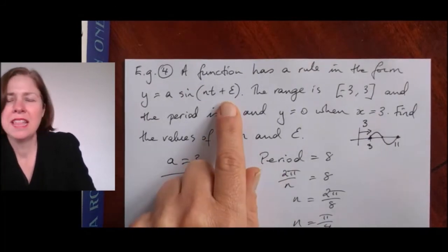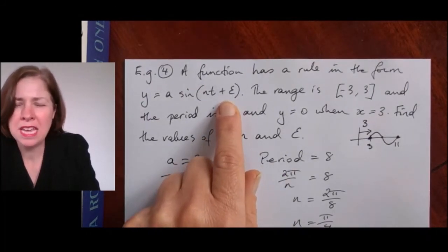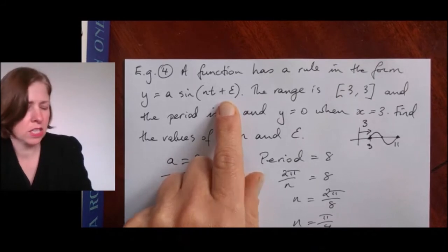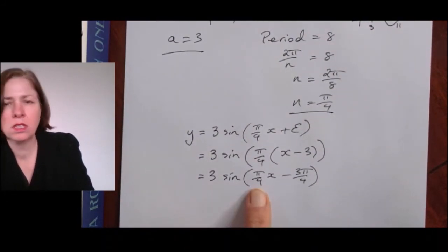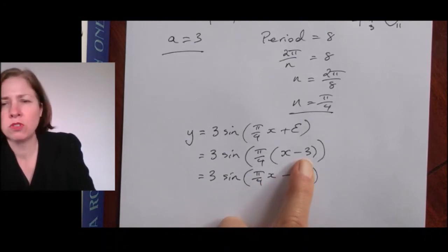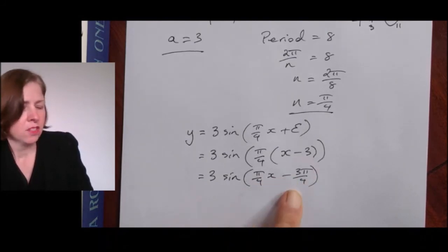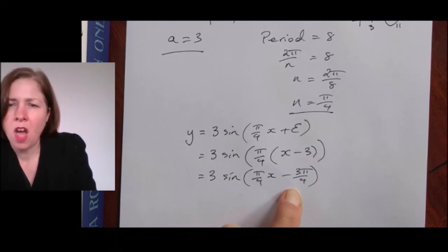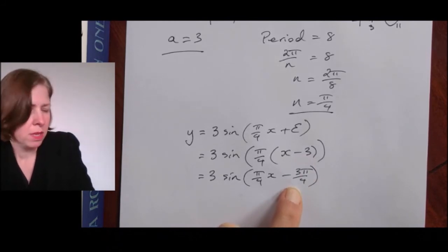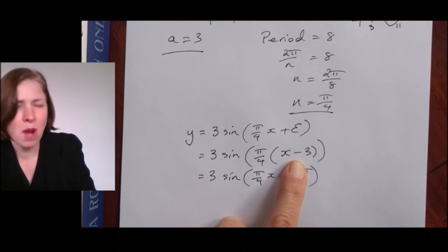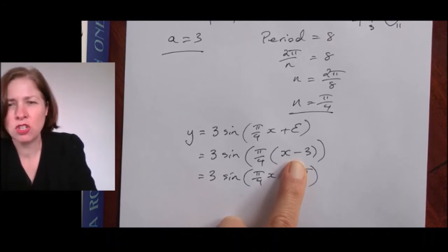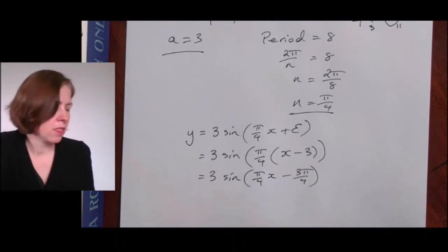Notice that in this format — the format given in the question — epsilon does not give me exactly the horizontal translation. I need to take out a factor of n first before I get the horizontal translation of three. That's one way of doing it. I like this method because x minus three clearly gives a translation to the right of three — I find that quite straightforward.